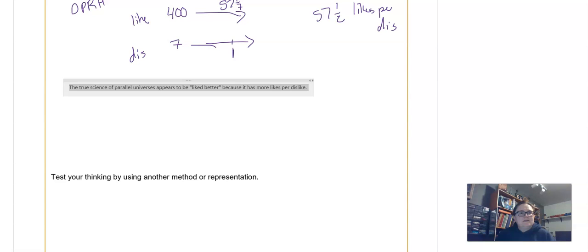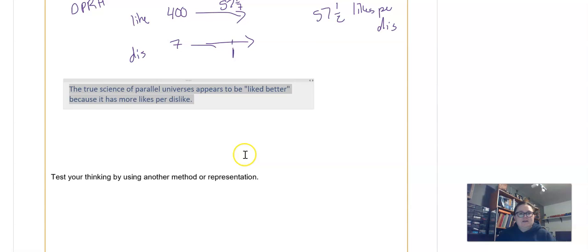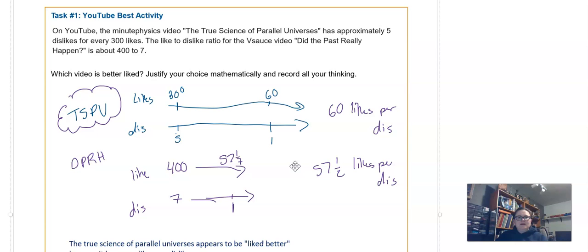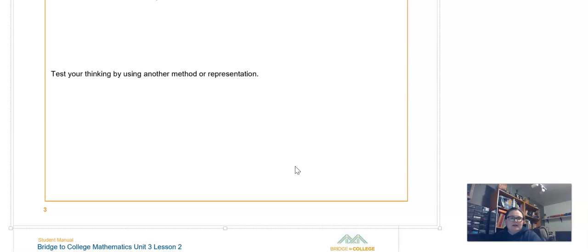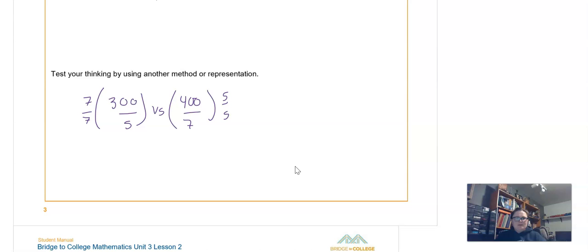All right. So the next question literally says to test our thinking by using another method. So my other method would be, because the other method we would maybe have, we could compare 300 to 5 and 400 to 7. Maybe we try to find a common denominator so that we're comparing them to the same thing. So then we would multiply this by 7 over 7, and this by 5 over 5, so we could see what they look like with the same denominator.